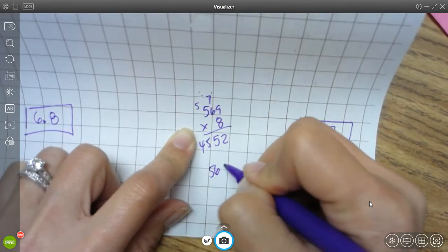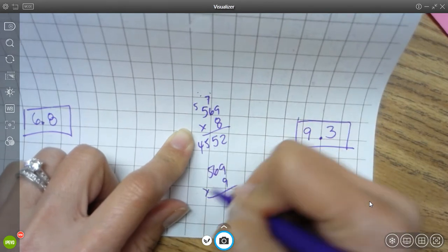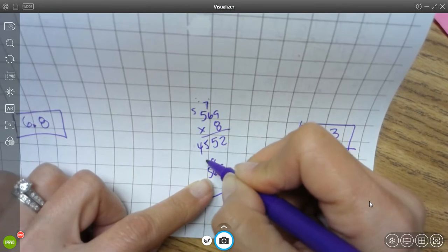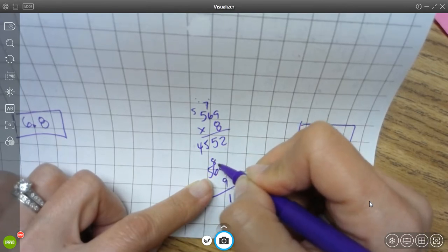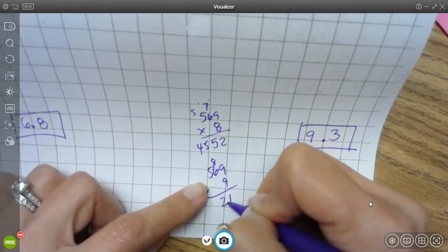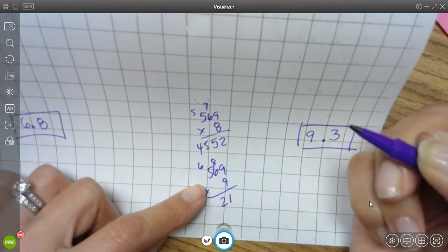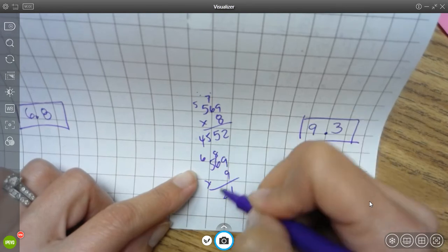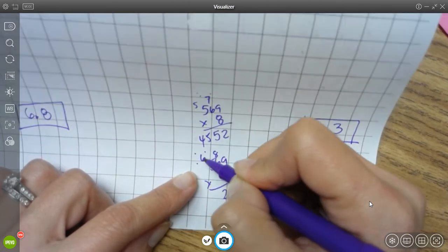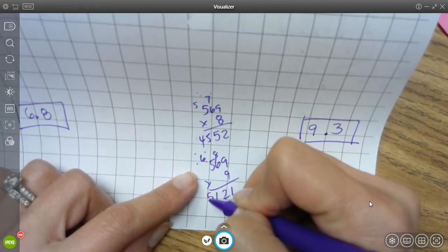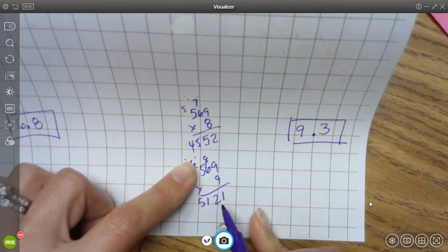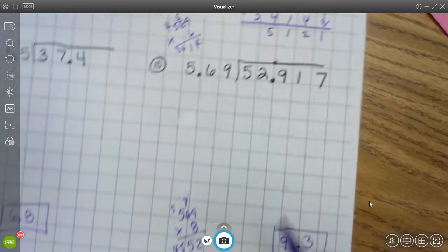569 times 9. That's 81. 54. Plus 8 more. 54. 55. 56. 57. 58. 59. 60. 61. 62. See, sometimes even I have to count with my fingers. 5 times 9 is 45. Plus 6 more. 45. 46. 47. 48. 49. 50. 51. Oh, what do you know? Look at that. Exactly. 5,121. 5,121.